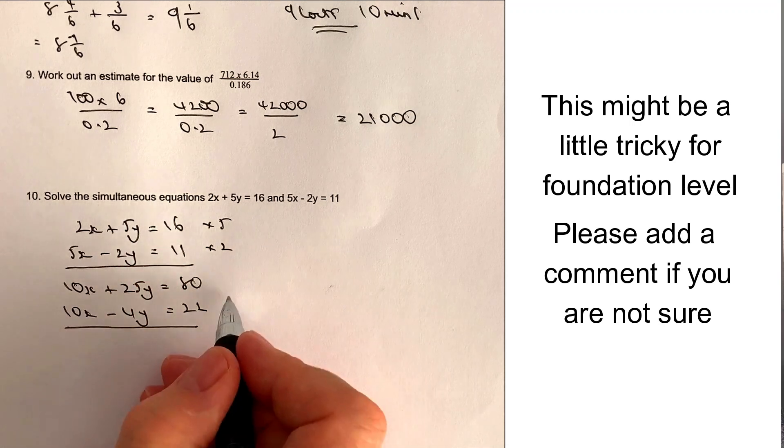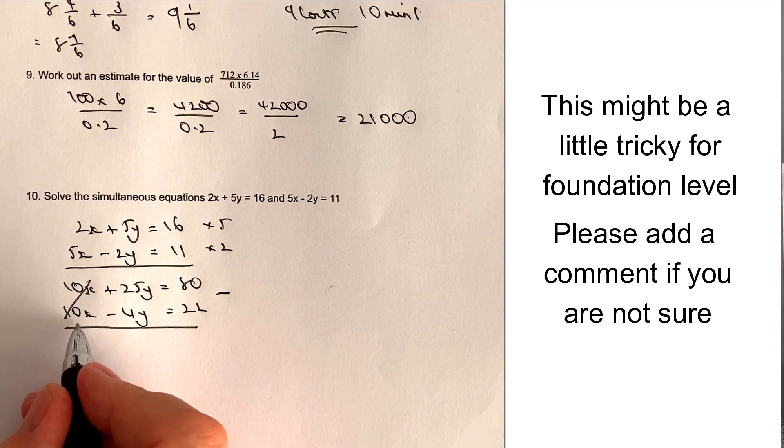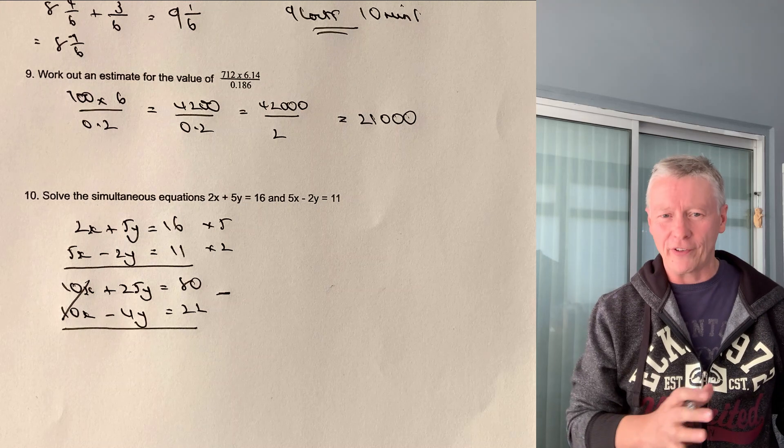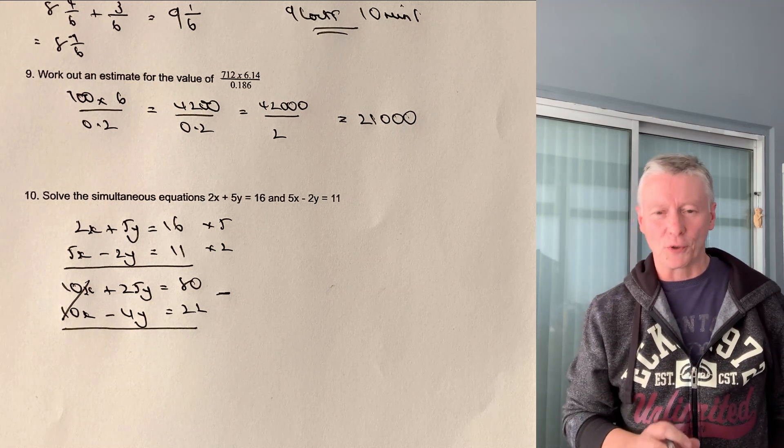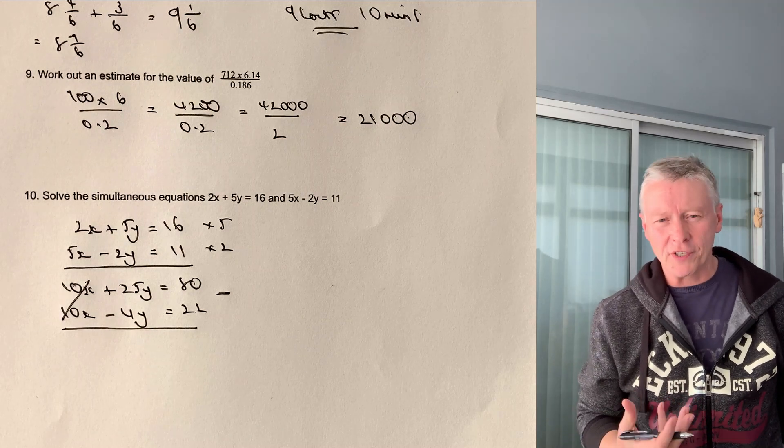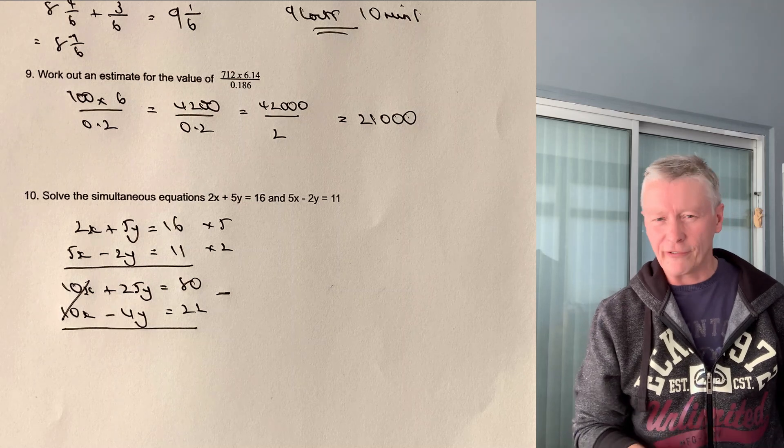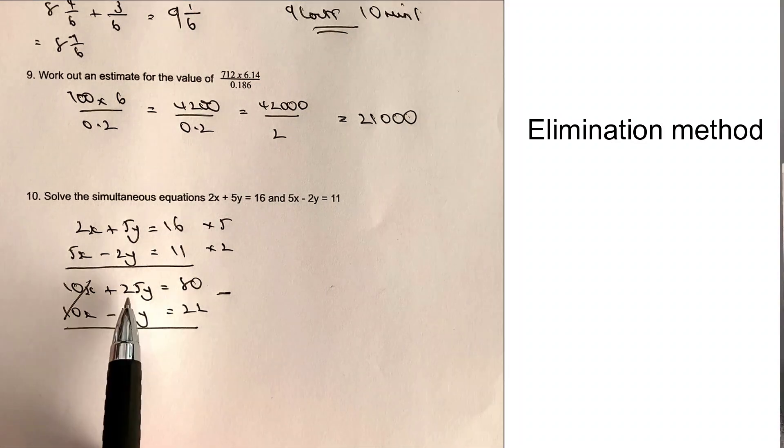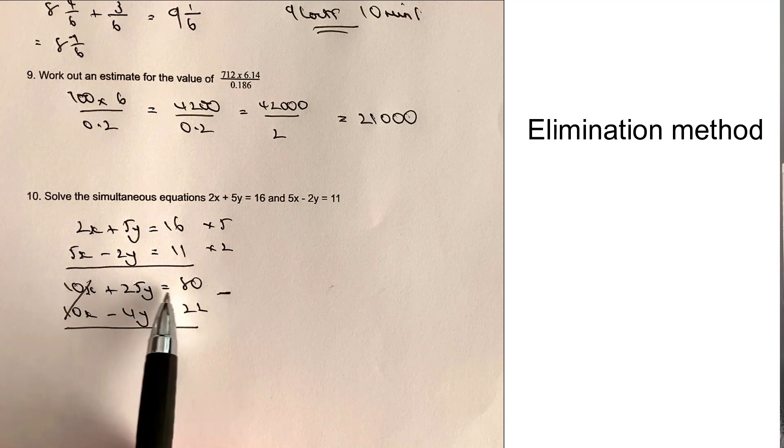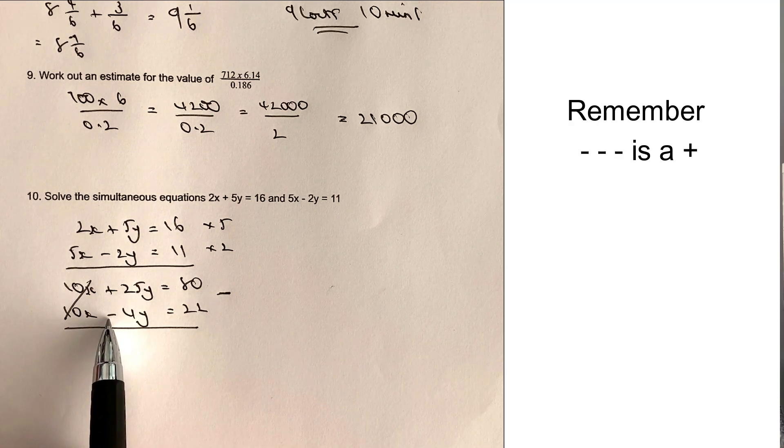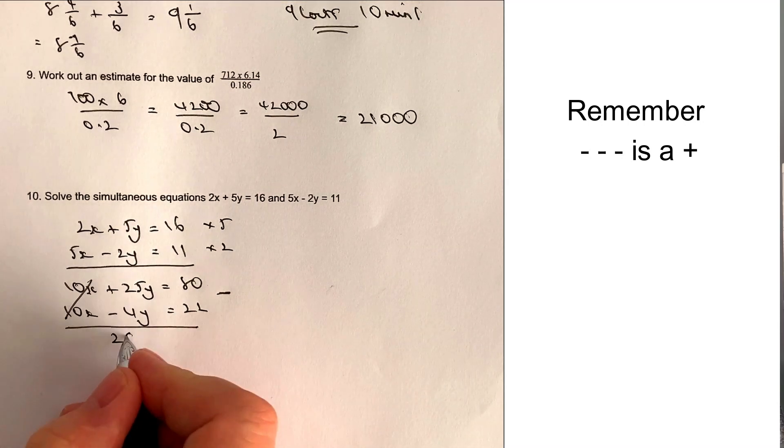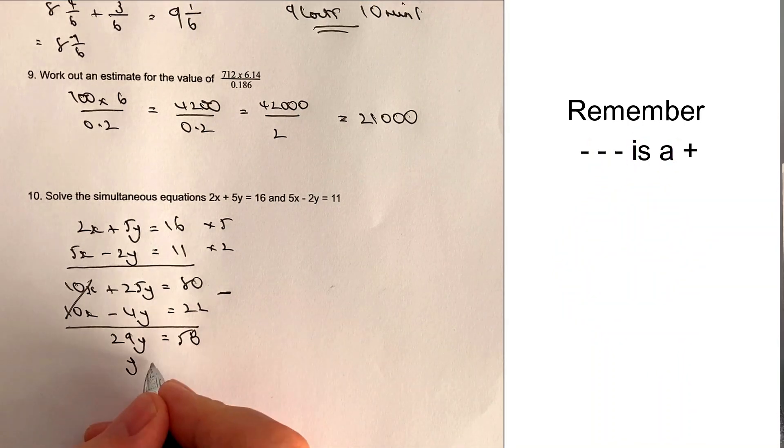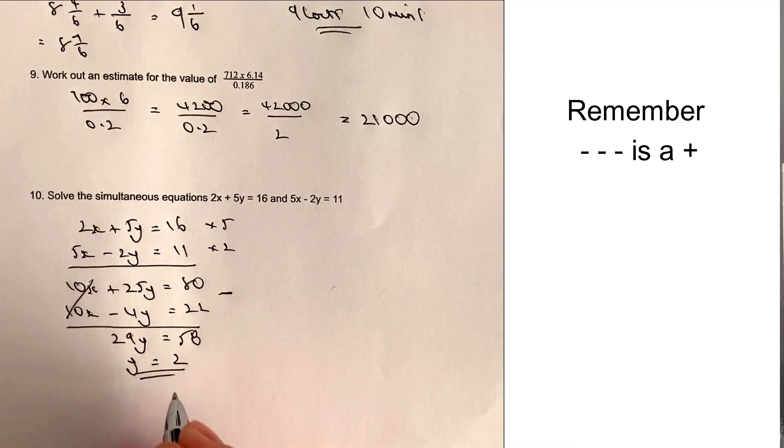Now, what that allows me to do then is when I subtract them, I can just do 10x minus 10x, which means I get rid of the x values and I can just concentrate everything onto the y values. This is a very common way. It's called elimination. Sometimes you get an alternative way, which is substitution. But in this particular one, elimination is by far away the easiest way of dealing with these simultaneous equations. So let's finish this one off. I'm going to get 25y minus. Now, be careful. It's 25y minus minus. So minus and a minus together is going to be a plus. So I'm going to get 29y. And then 80 minus 22 is 58. So what that will give me then is dividing through by 29, y will equal 2.